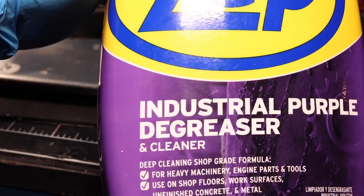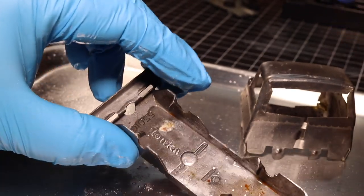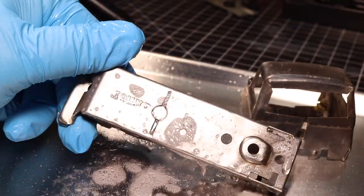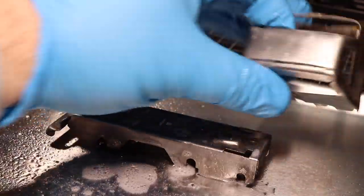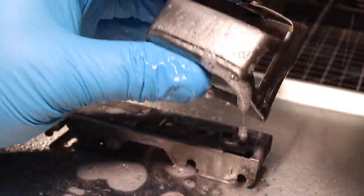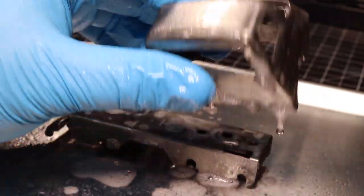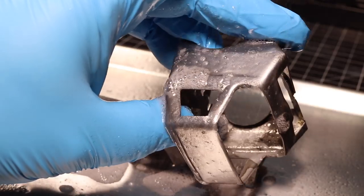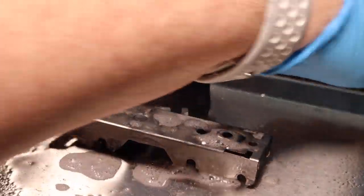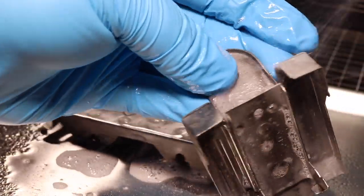Before paint, I want to give all the metal a good clean with some degreaser. I'm using Zep. You can use any degreaser. It just happens to be what I have on hand. I'll scrub it in real good with the toothbrush, and then I will rinse it off with some water, all while wearing gloves. You do not want to touch the bare metal, and then I will let it air dry before I paint.